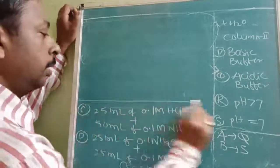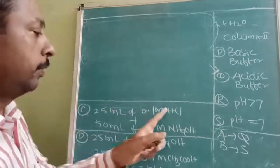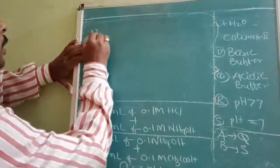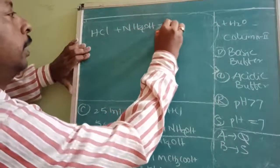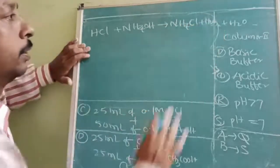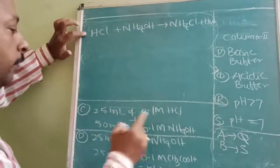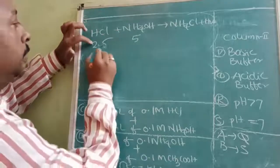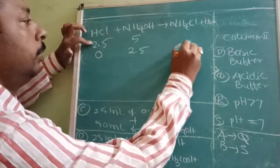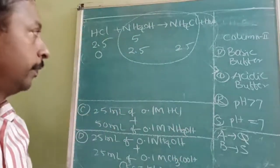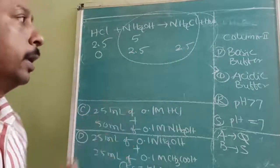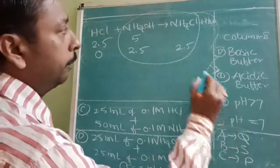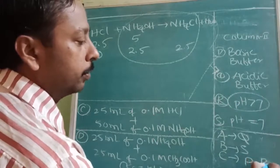For part C: we have strong acid HCl and weak base NH4OH. There may be a basic buffer. HCl + NH4OH → NH4Cl + H2O. HCl = 2.5 milliequivalents, NH4OH = 5 milliequivalents. After reaction: HCl = 0, NH4OH = 2.5, NH4Cl = 2.5. We are left with weak base and its salt with strong acid — this is a basic buffer, pH > 7. C answer is P, R.